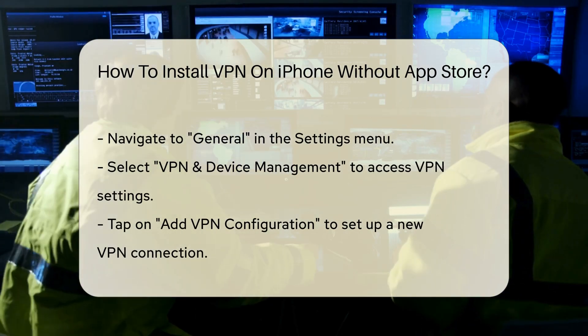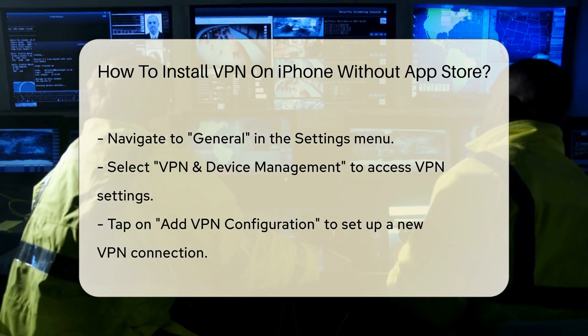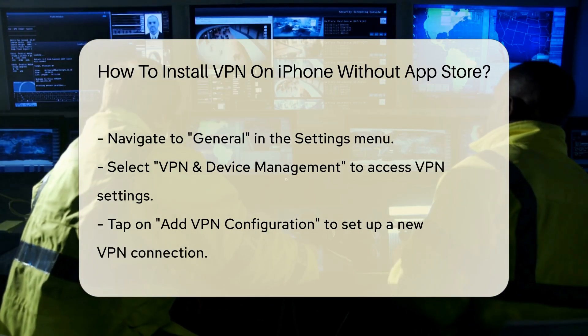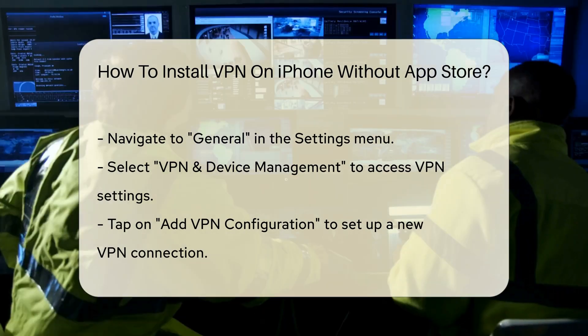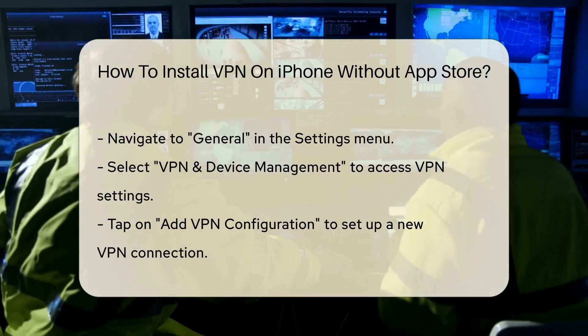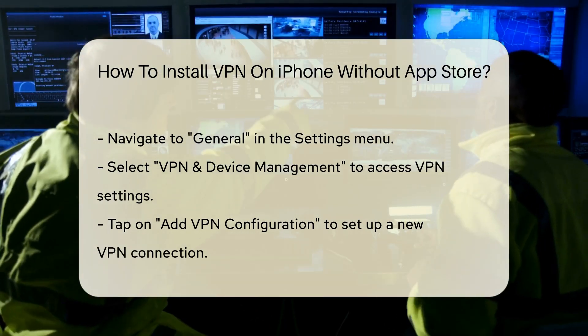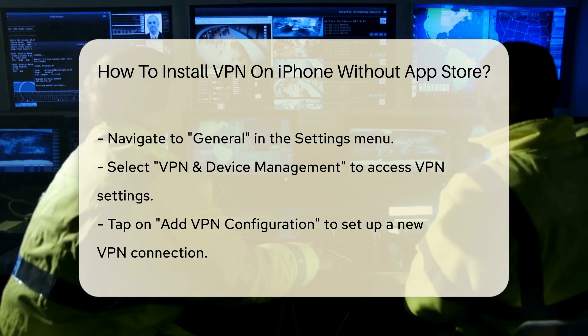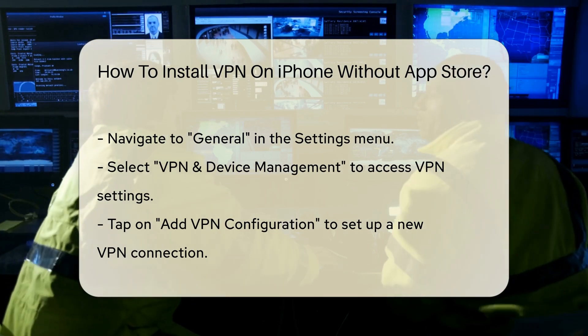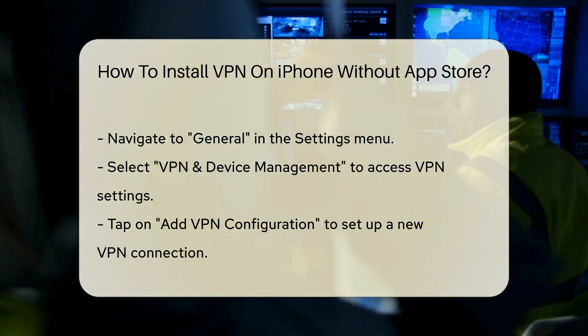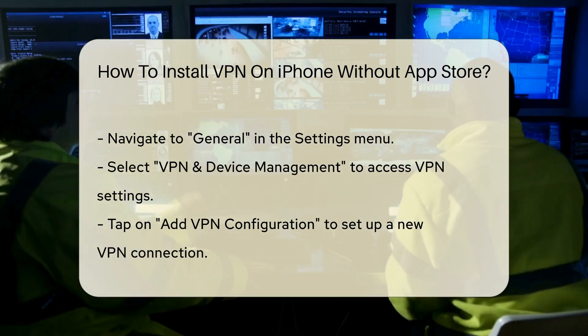Open the Settings app on your iPhone. Scroll down and select the option labeled General. In the General menu, find and tap on VPN and Device Management. Next, tap on Add VPN Configuration.